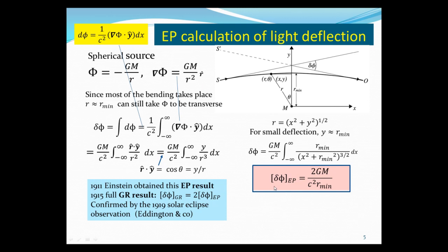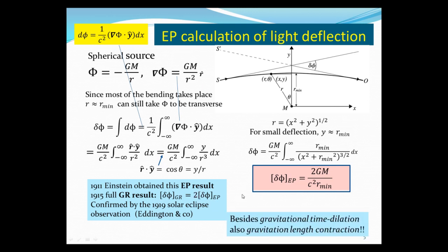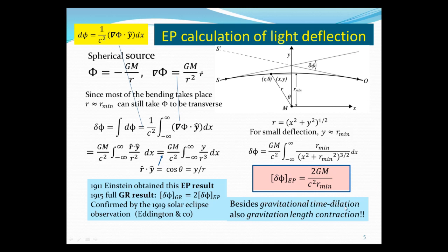Einstein obtained this result in 1911 using the Equivalence Principle. When in 1915 he developed the full General Relativity theory, he calculated the deflection angle and found it to be twice as much. The Equivalence Principle misses half the value. The GR result was confirmed in the famous 1919 solar eclipse observation by Eddington and collaborators. The factor of 2 arises because, in addition to gravitational time dilation captured by the Equivalence Principle, the full curved spacetime also has gravitational length contraction, which contributes an equal amount.